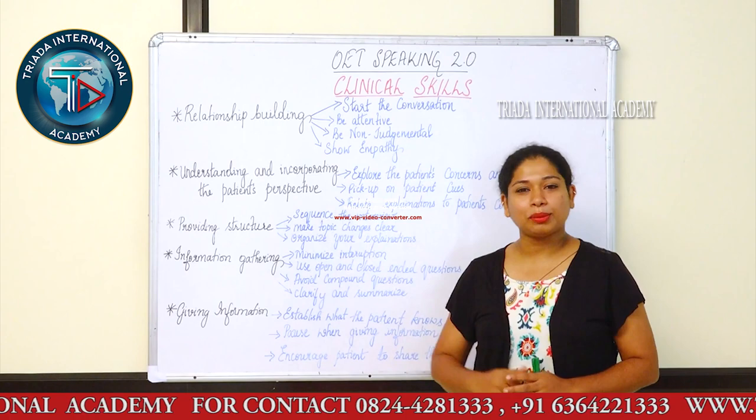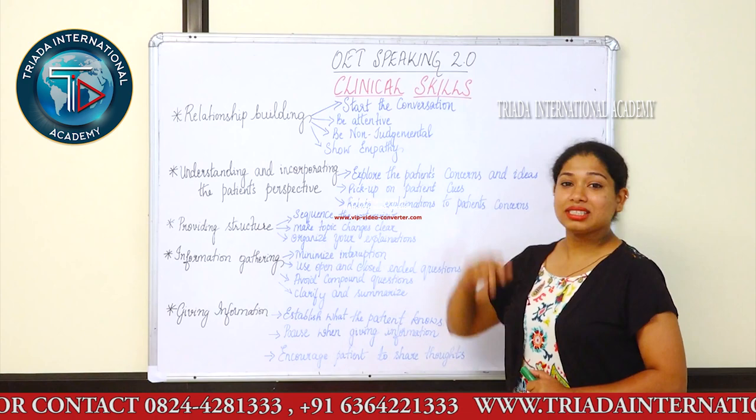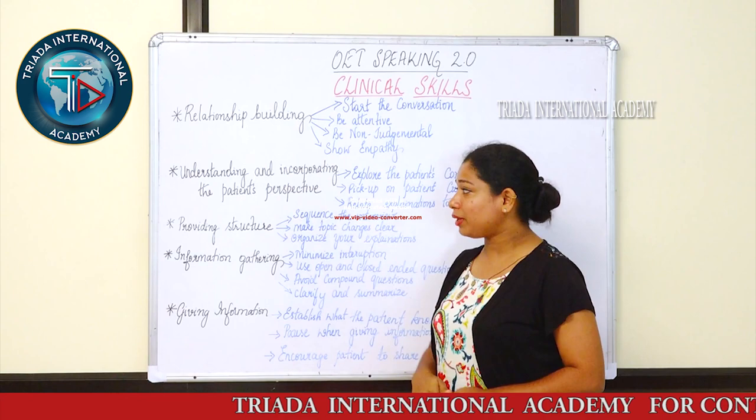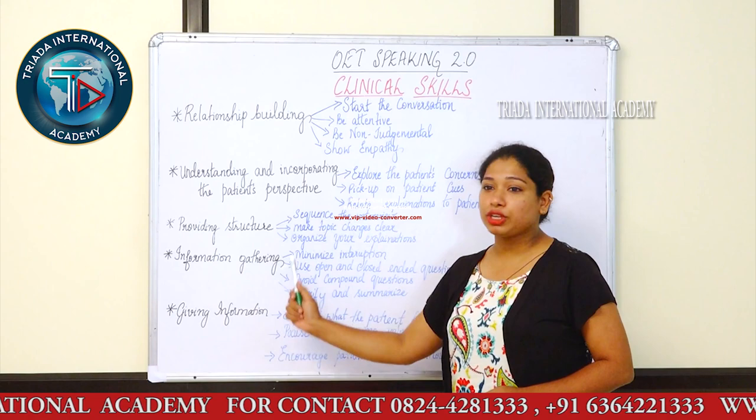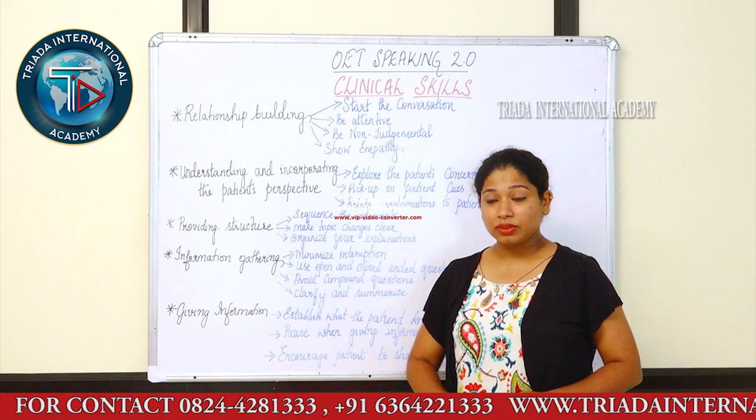Now, what do these clinical skills consist of? The clinical skills has got 5 different criterias. The first criteria is called relationship building. The second one is understanding and incorporating the patient's perspective. The third one is called providing structure. The fourth one is information gathering, and we have got the fifth one which is giving information.